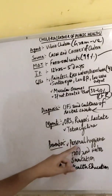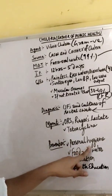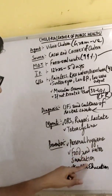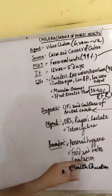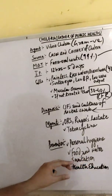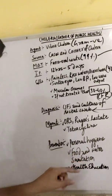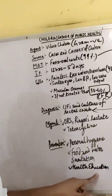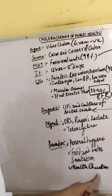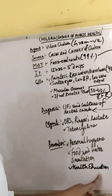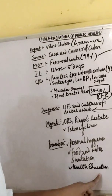Prevention includes personal hygiene and food and water sanitation, since Cholera is a food and waterborne disease. Health education is also one of the most important preventive measures in the case of Cholera, as many people are not aware of it, so information about Cholera must be spread.